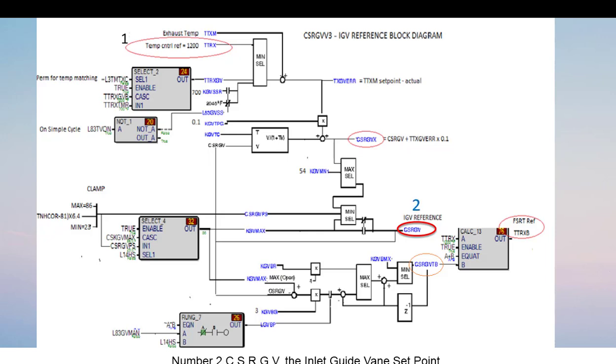Number 2, CSRGV, the inlet guide vane set point. Number 3, CSRGVX, the auxiliary signal to CSRGV.